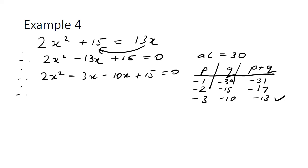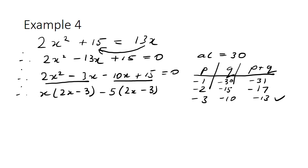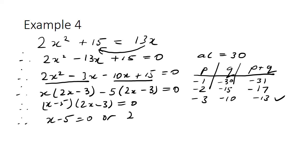Now keep working on the left-hand side by grouping the first two and the second two terms. The highest common factor of the first two terms is x, so we end up with x times 2x take 3. The highest common factor of the second two terms is minus 5, giving minus 5 times 2x take 3, all equals 0. Therefore x take 5 times 2x take 3 equals 0. Using the null factor law: x take 5 equals 0 or 2x take 3 equals 0. Therefore x equals 5 or x equals 3 over 2.